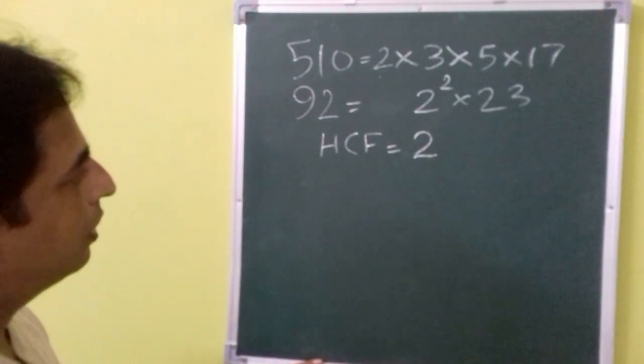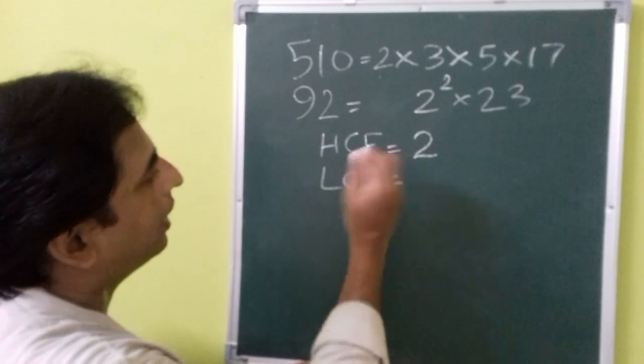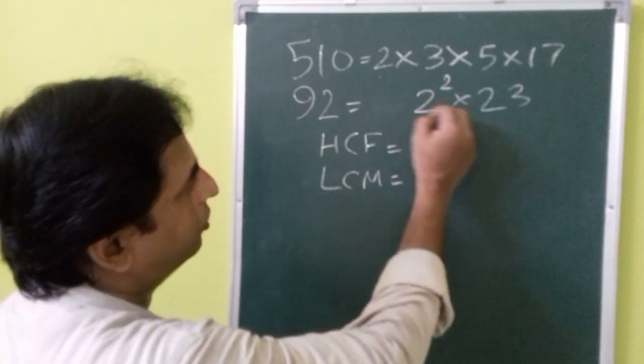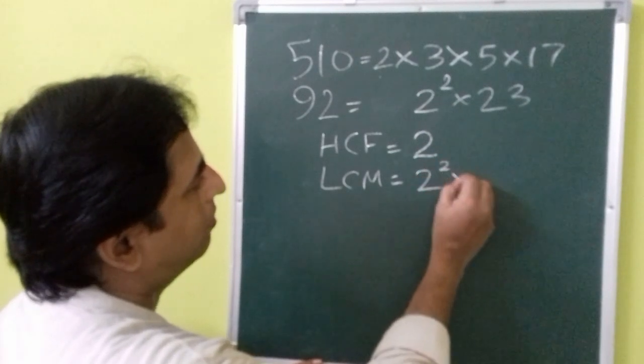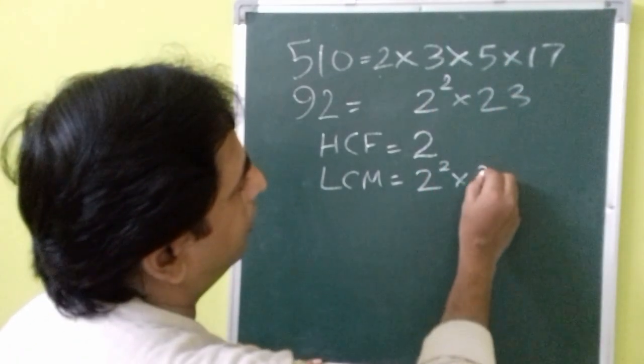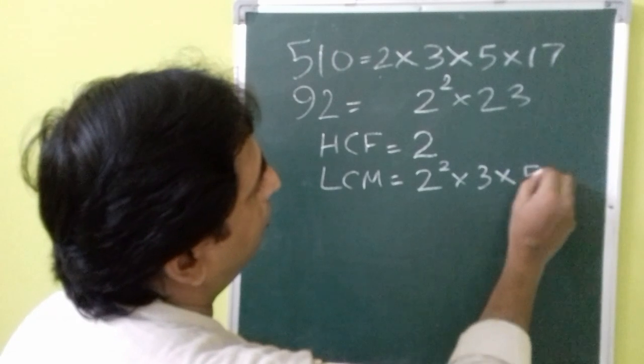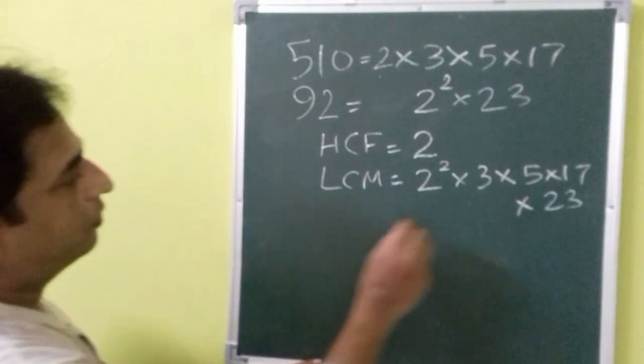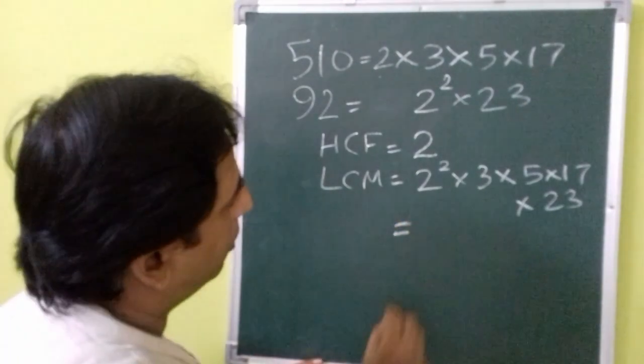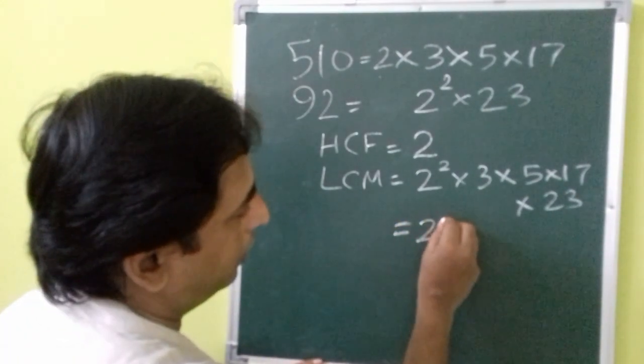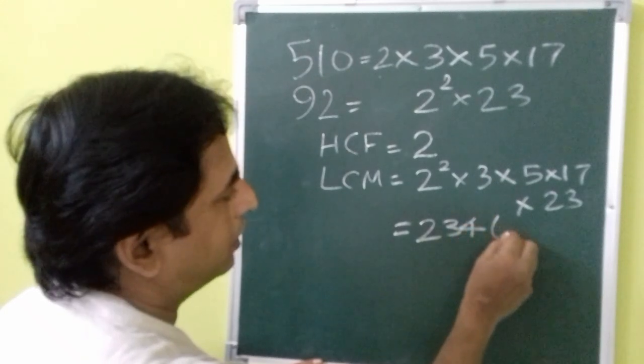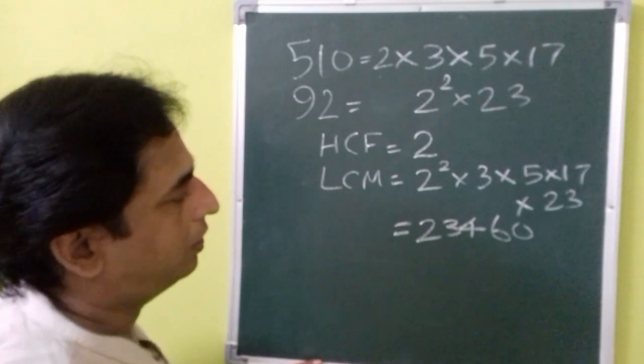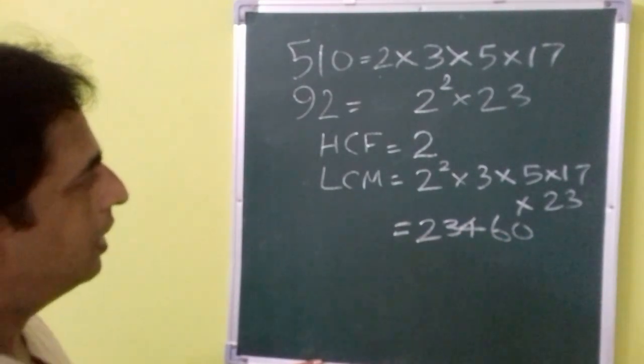So we will take the lowest power of that, that is 2. So HCF is 2 and for LCM we will be taking the highest power of all the factors. The highest power of 2 is 2 squared multiplied by all the factors. So the product of this will be 23,460. LCM is 23,460.